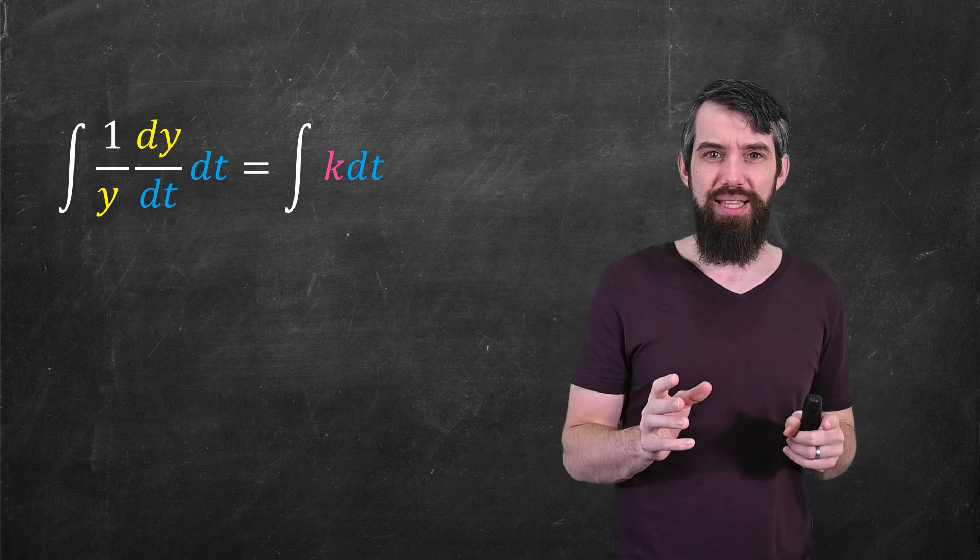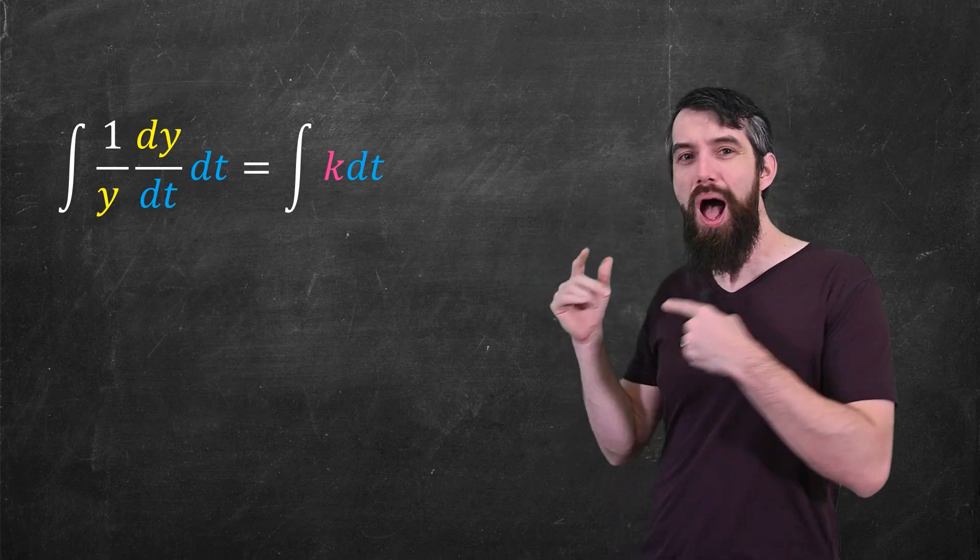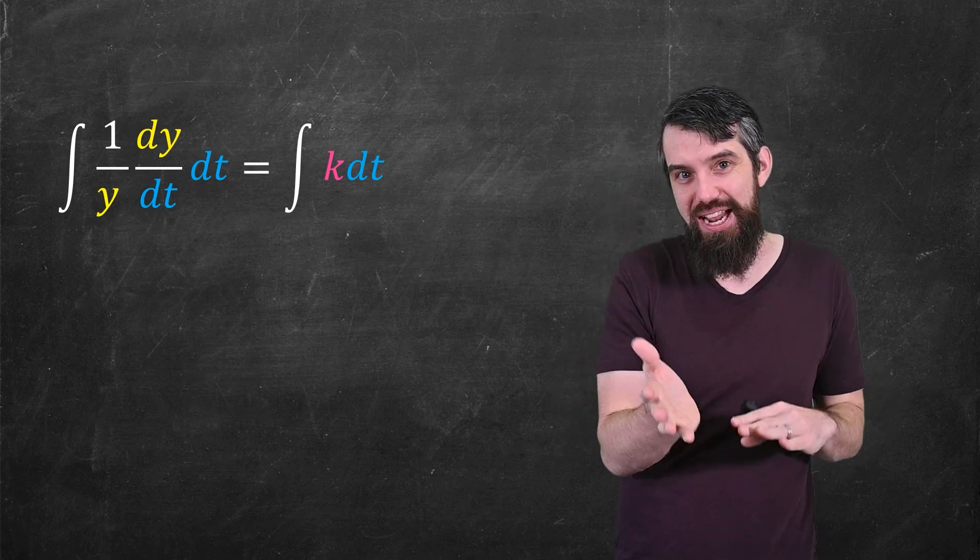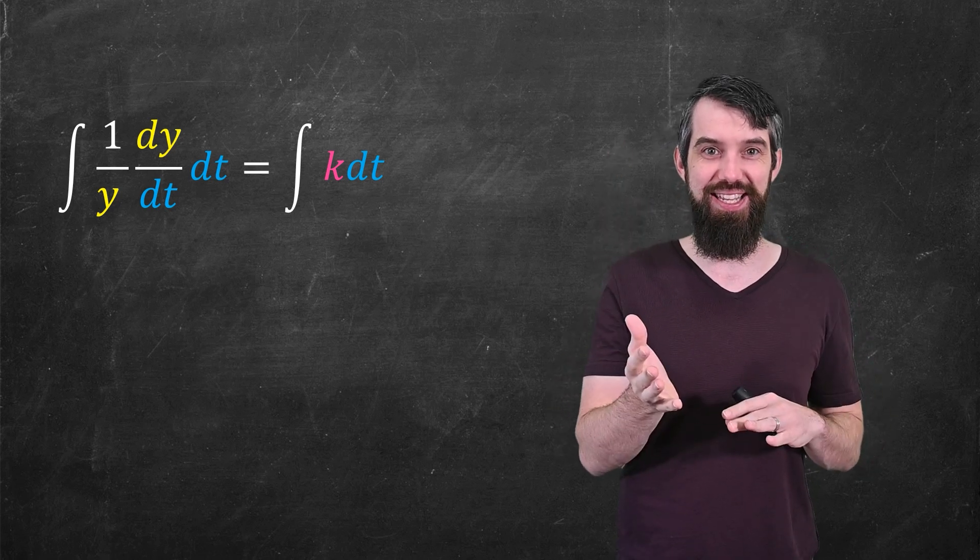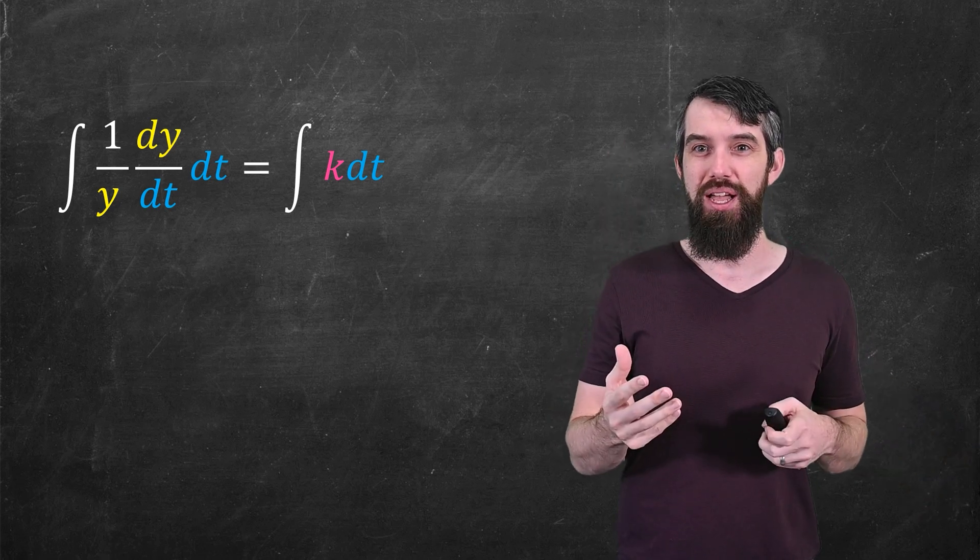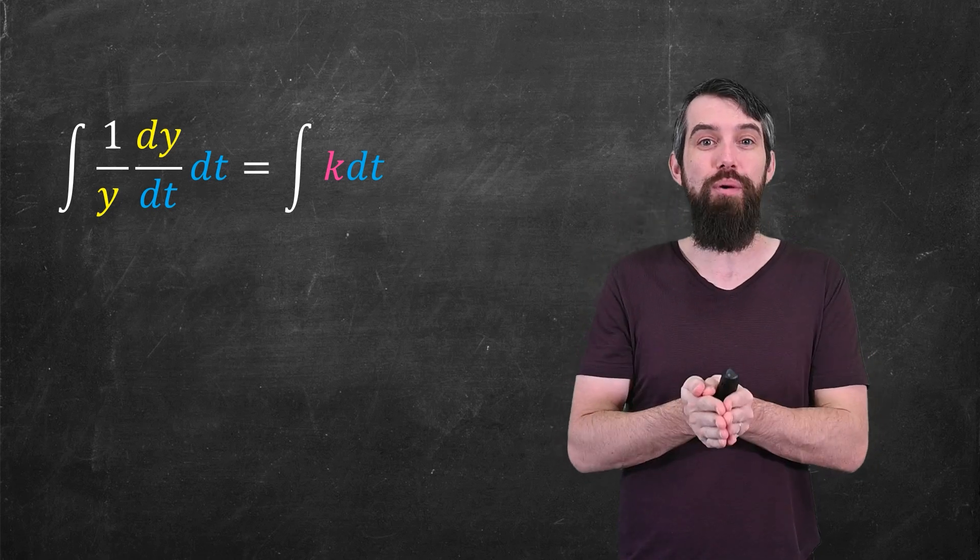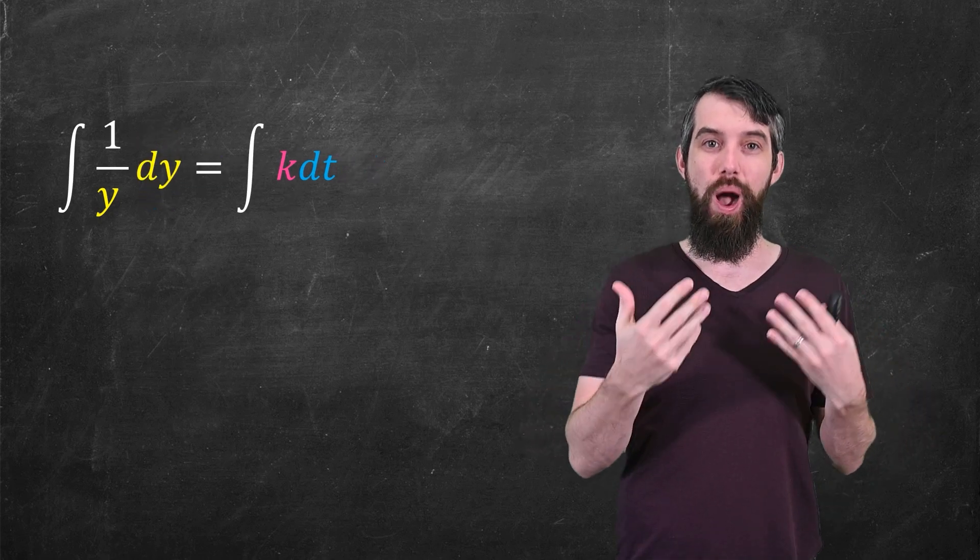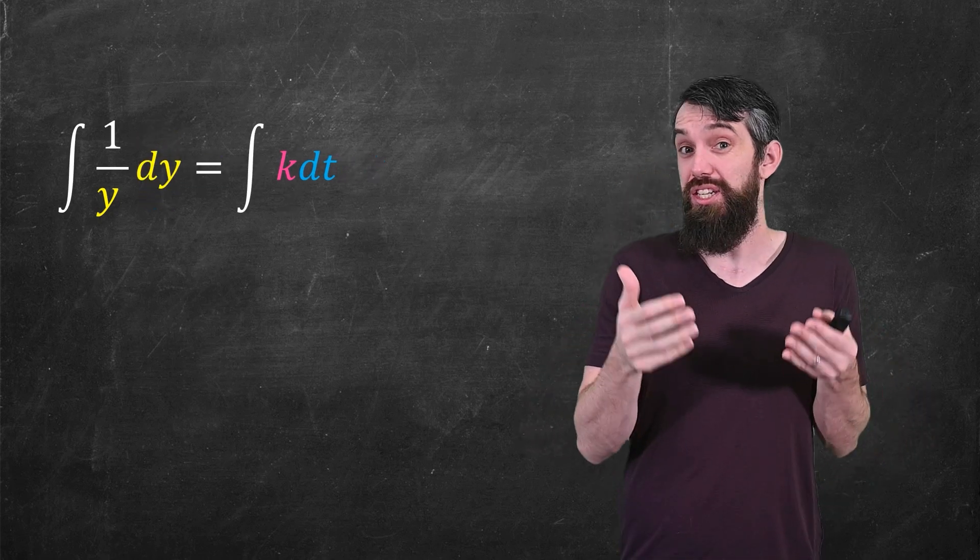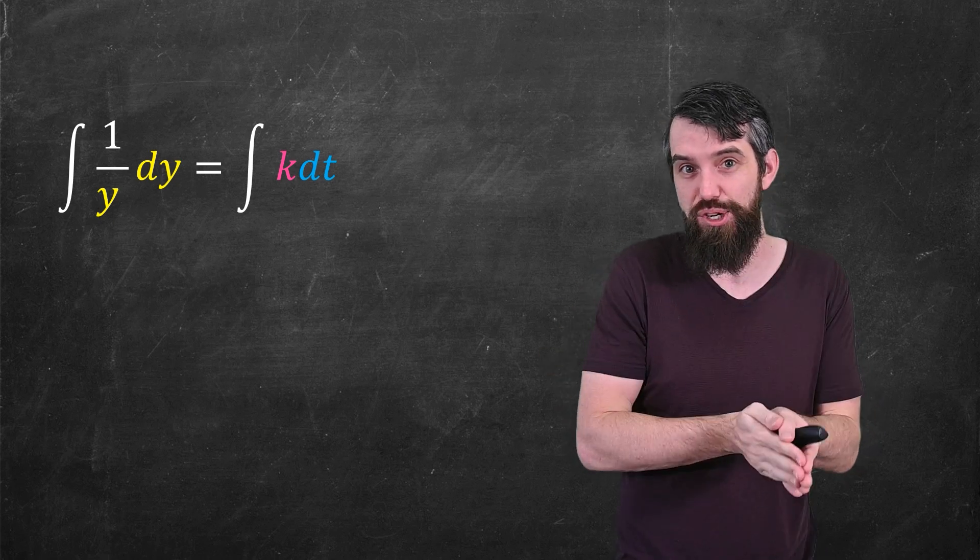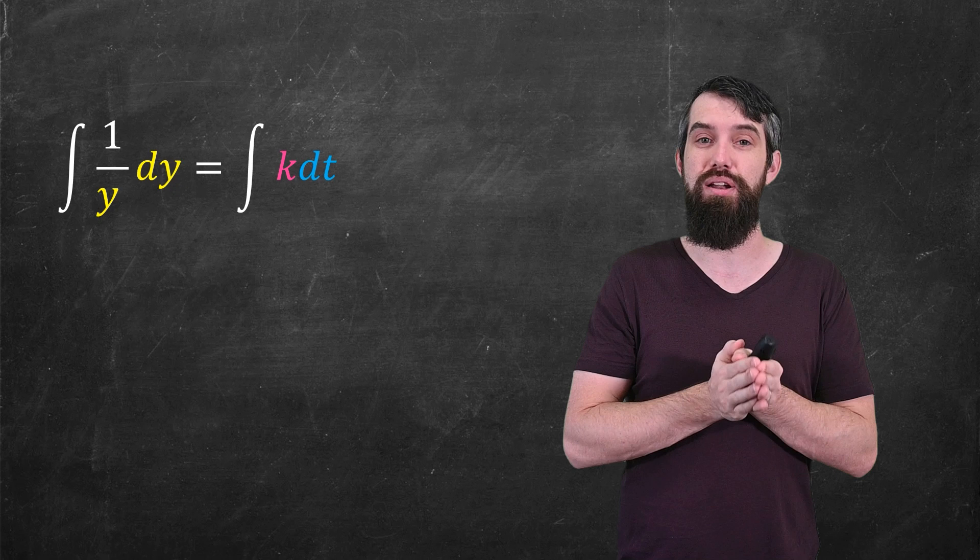And then I notice that I have on the left this dy/dt dt. And it's tempting to just say that I can cancel the dt divided by dt, which is sort of a convenient fiction, because what we're actually going to do is define something new called dy. dy will be defined to be dy/dt dt. This is just a change of variables. So now on the left I have an integral entirely in terms of y, and on the right an integral entirely in terms of t.